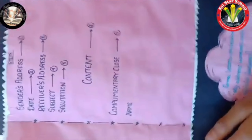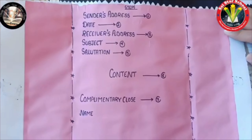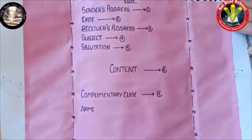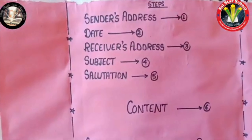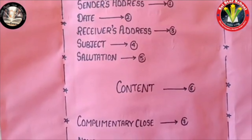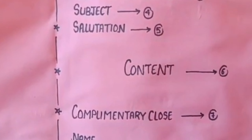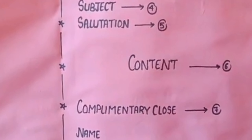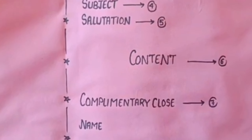The first step is sender address. In this first step, you should write the sender address. And then the second step is the date. And then the third step is receiver address — whom you want to send the letter. And the fourth step is subject.